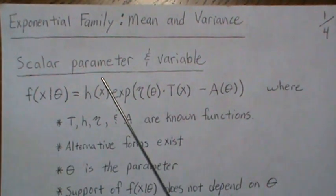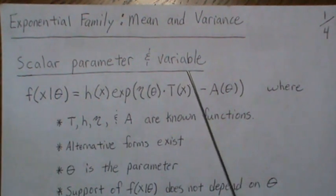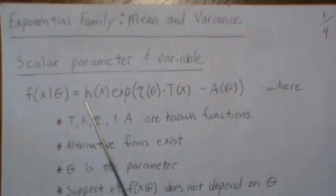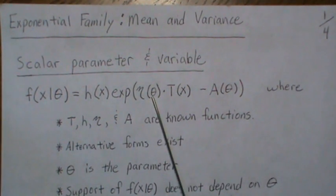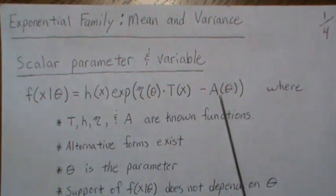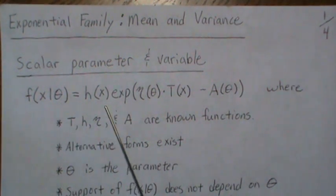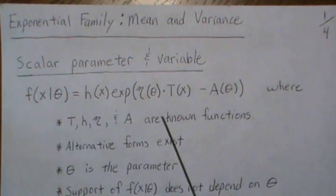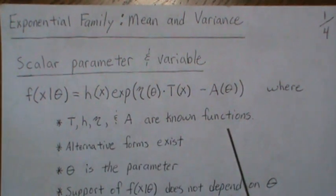We're going to look at the scalar case — when we have a scalar parameter and a variable, so a sample size of one. If your density or probability mass function can be represented in this fashion — a function of x, a function of your parameter, a function of x again, and a function of theta — then it's part of the exponential family, where the functions T, h, eta, and a are all known.